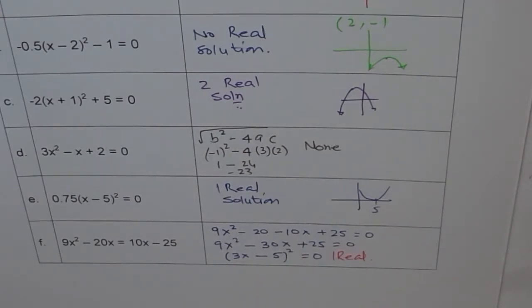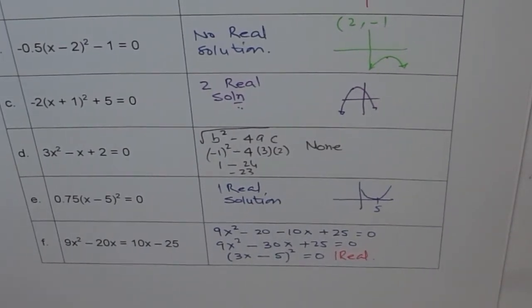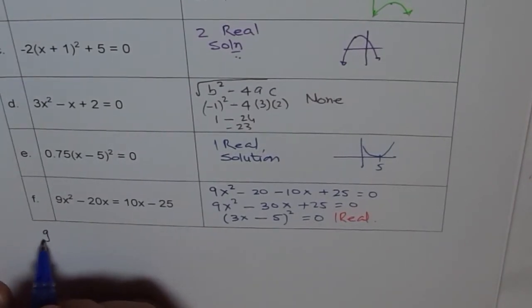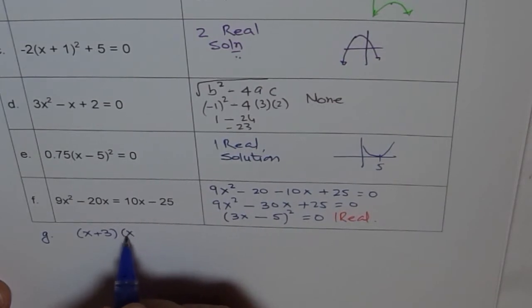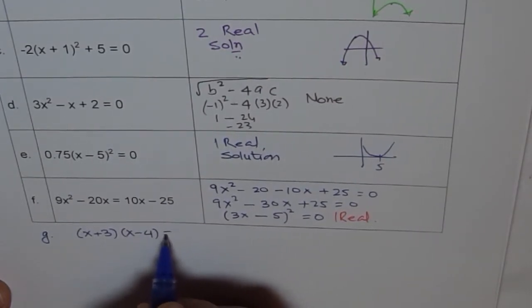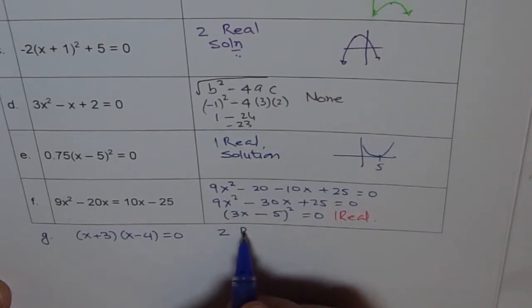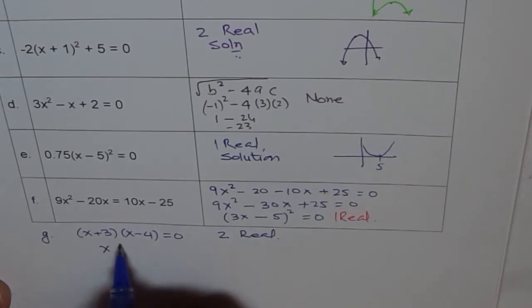Now I have not given intercept form because number of intercepts will clearly indicate what number of real solutions there are. But let me add one or two for you here. For example, I could write here (x + 3)(x - 4) = 0, so there are two real solutions. Both could be zeros, this will be two real solutions.